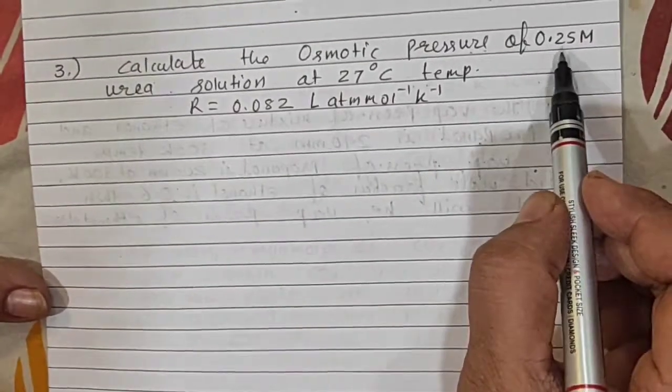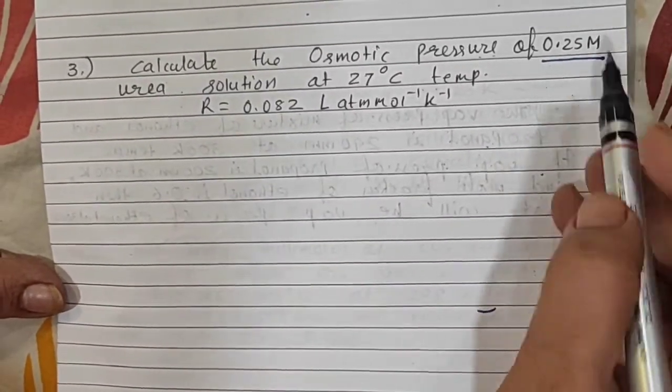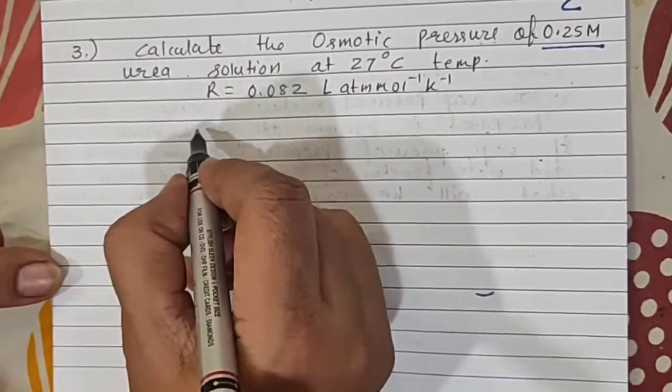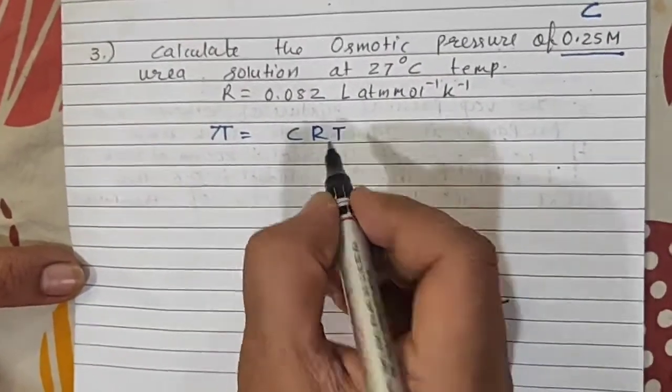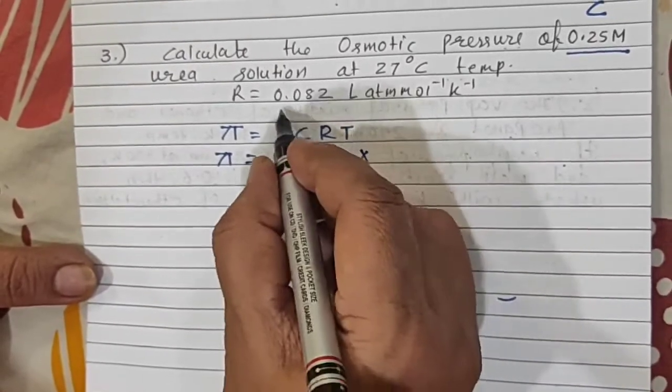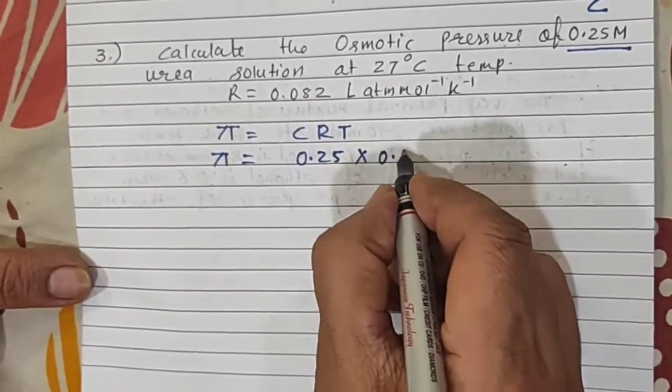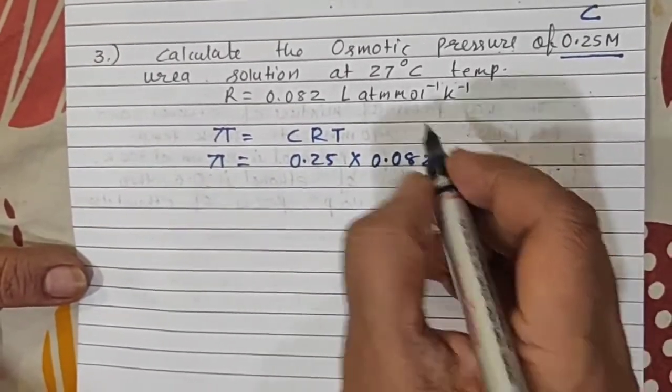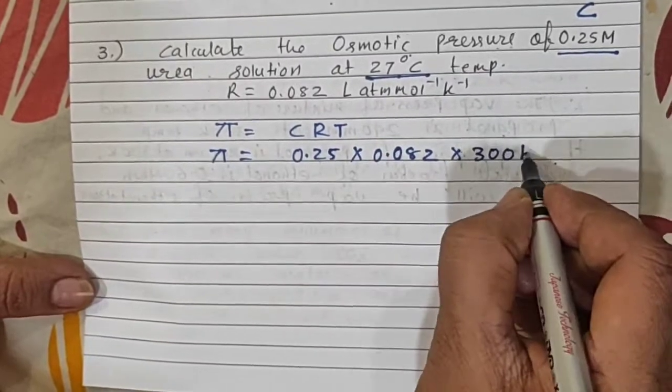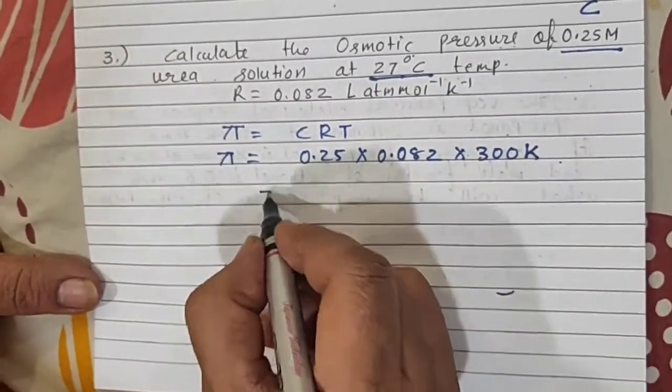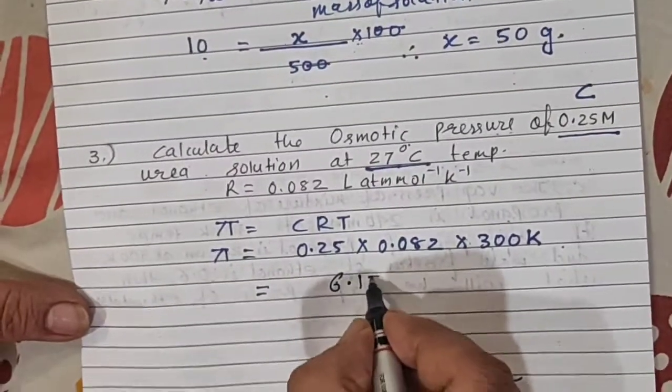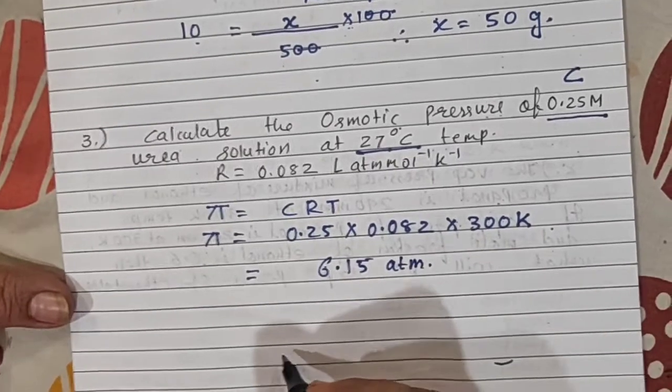Calculate the osmotic pressure of 0.25 molar urea solution at 27°C temperature. Again, we will use the same formula π = CRT. Here osmotic pressure only we have to calculate. So π equals C is 0.25 multiplied by R value 0.082 into temperature 300 Kelvin. 27°C converted into Kelvin is 300 Kelvin. Answer is 6.15 atm atmosphere. Very easy question.